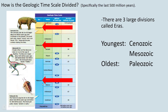If we look at the last 500 million years, we divide time in a couple of different ways. We have three large divisions called eras. The youngest era is the Cenozoic, then the Mesozoic, and the oldest is the Paleozoic. The three eras in the last 550 million years are: Paleozoic, oldest; Mesozoic; and Cenozoic, youngest.